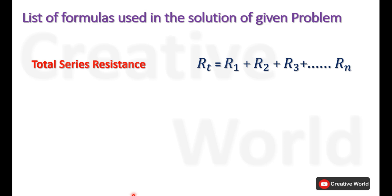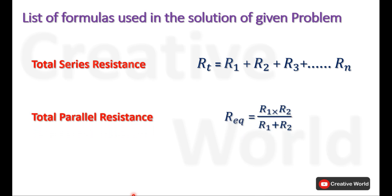We will also be using the parallel equivalent resistance calculation formula for two parallel connected resistances. R equivalent of two parallel connected resistances is calculated by taking the product of both resistances divided by their sum.